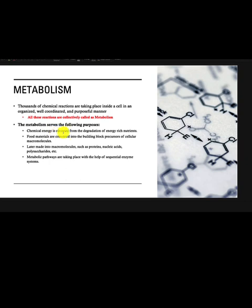Chemical energy is obtained from food — these energy-rich nutrients. If you eat a diet filled with saturated fats, you'll get poor energy. A balanced diet with the right amount of protein, complex carbohydrates, and fatty acids will produce favorable energy. The food we consume is converted into building blocks called cellular macromolecules — which is what we discussed in lectures one and two regarding micromolecules and macromolecules.